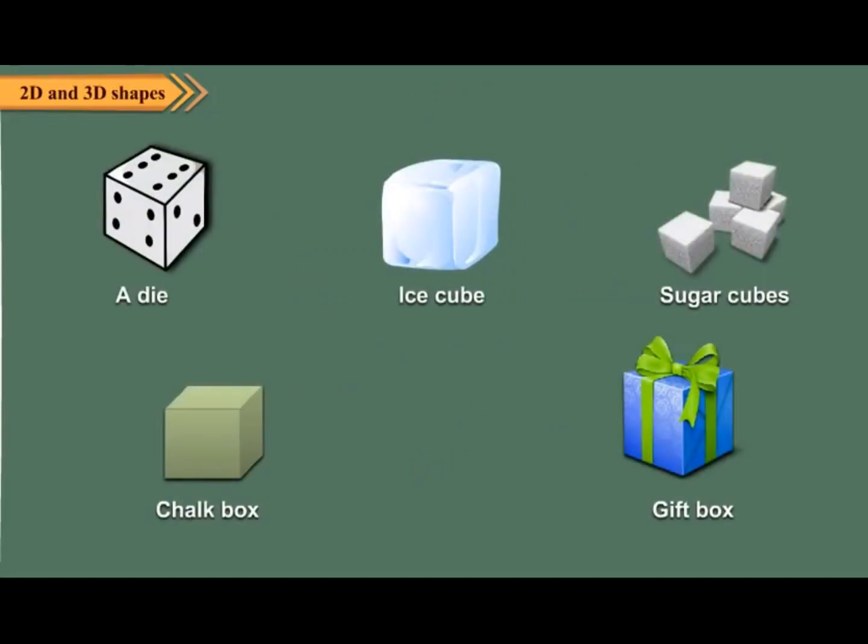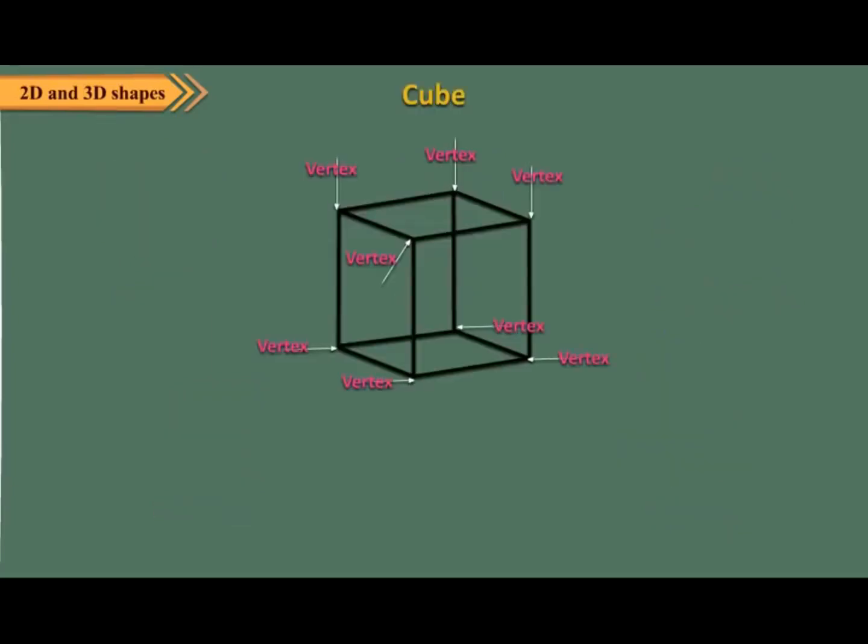Look at the shapes of objects shown here. All these objects have the shape of cube. The die which you play is a cube. A cube has eight vertices, twelve edges and six faces.